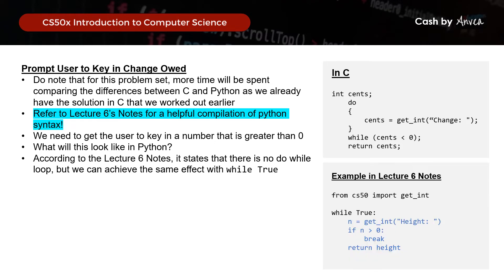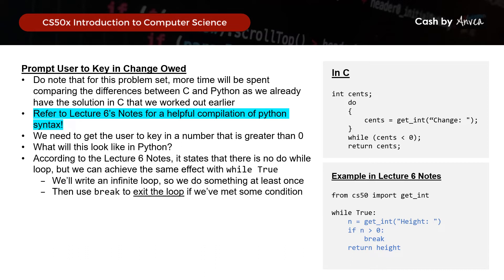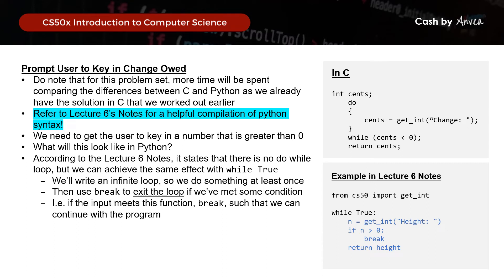The lecture notes give a sample where 'while True' means whatever comes after will run perpetually unless a certain condition is met. For example: while True, n equals get_int('height'), and as long as height is greater than 0, we use 'break' to exit the loop. Since the height keyed in is greater than 0, we can break to exit the loop and move on with the rest of the program.